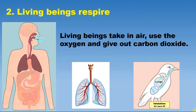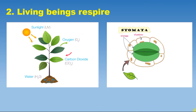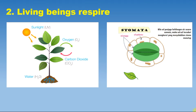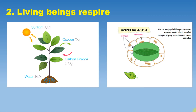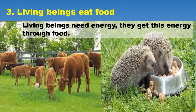The second characteristic is that all living beings show respiration — respiration is nothing but breathing. In humans, we breathe in oxygen and breathe out carbon dioxide. Lungs are the special respiratory organs responsible for respiration. Plants take in carbon dioxide from the air through small openings called stomata, present on the lower surface of leaves, and give out oxygen. All living beings involve in respiration, whereas non-living things do not show respiration.